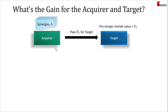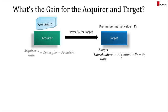Once the acquirer has decided the price and form of payment, the next part would be: what would be the gain for both the acquirer and the target? Let's assume that the target has a pre-merger market value of V sub T, and the acquirer has proposed to pay a price of P sub T, and the acquirer has estimated the synergies from this combination to be equal to S. The gain for the target shareholders would be the premium, which is the price paid to the target company minus the pre-merger market value of the target. For the acquirer, the gain would be the synergies minus the premium paid to the target — so synergies S minus (P sub T minus the pre-merger market value).